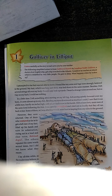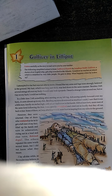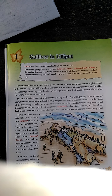In a little time, I felt something alive moving on my legs, advancing quietly forward over my body, coming almost up to my chin. Bending my eyes downwards as much as I could, I saw that it was a little man, hardly six inches high, with a bow and arrow in his hand. I felt at least 40 more men of the same kind following the first. I was greatly astonished and cried out so loudly that they all ran back in fear — some of them, as I was afterwards told, were hurt in leaping from my sides to the ground.